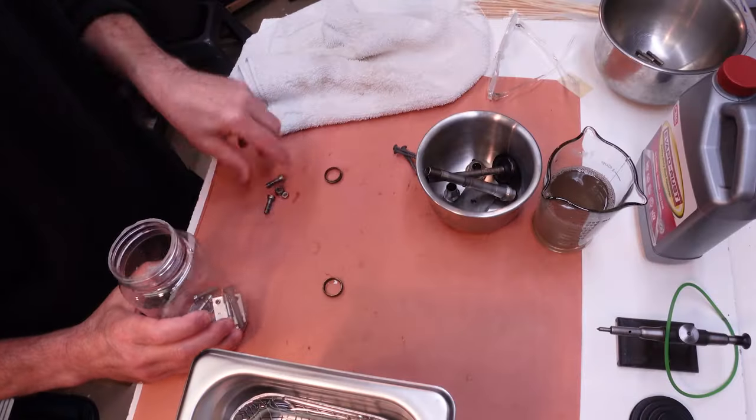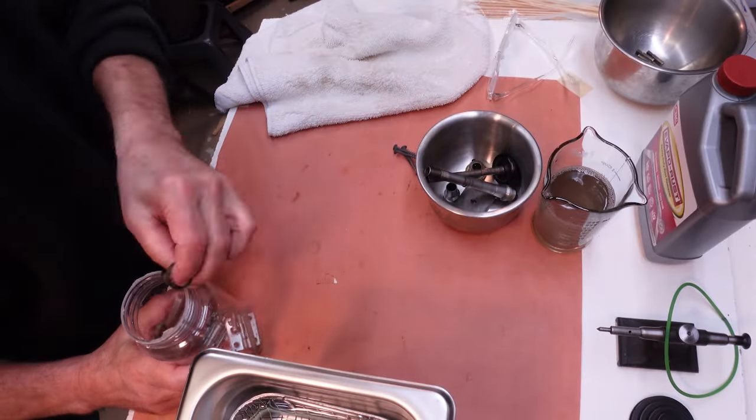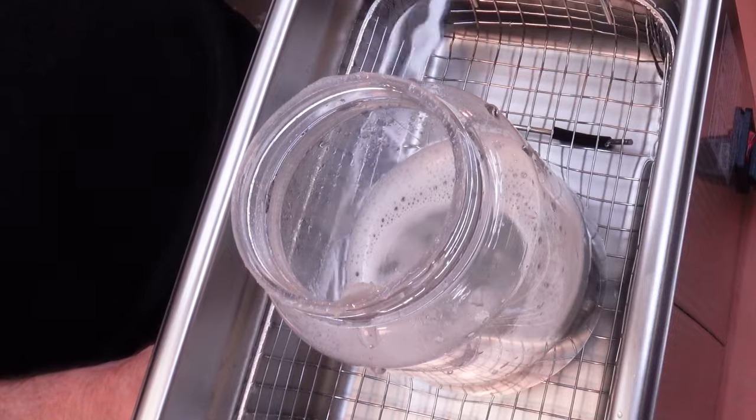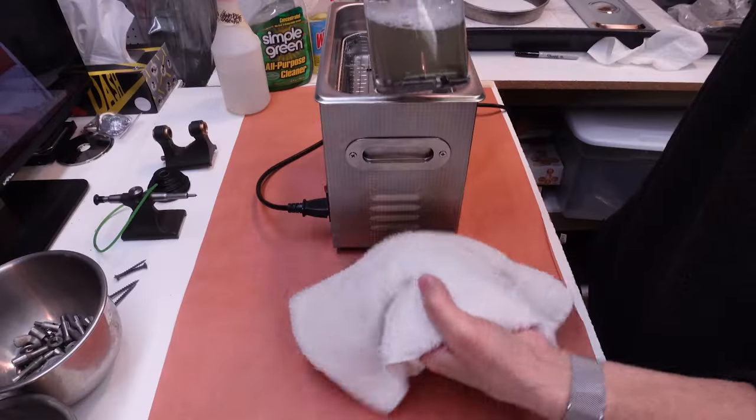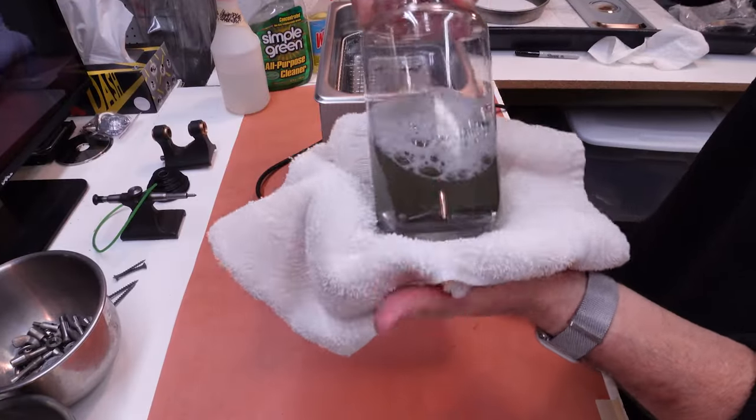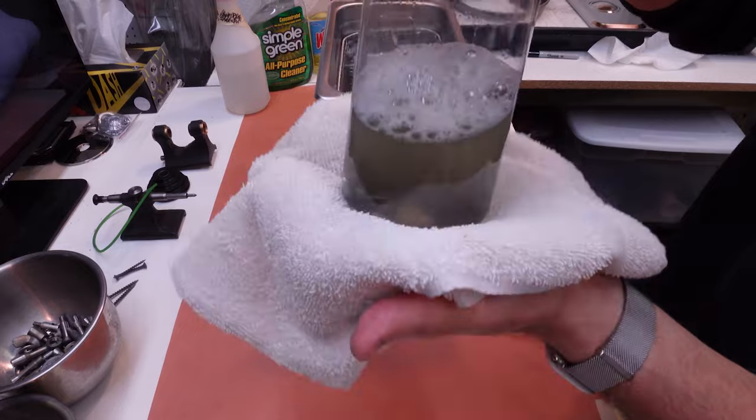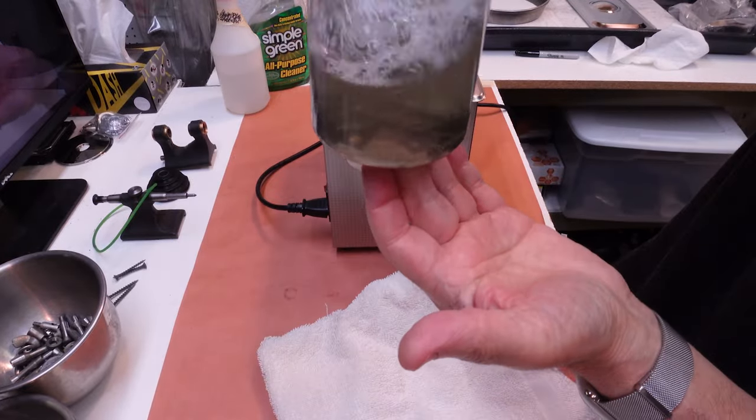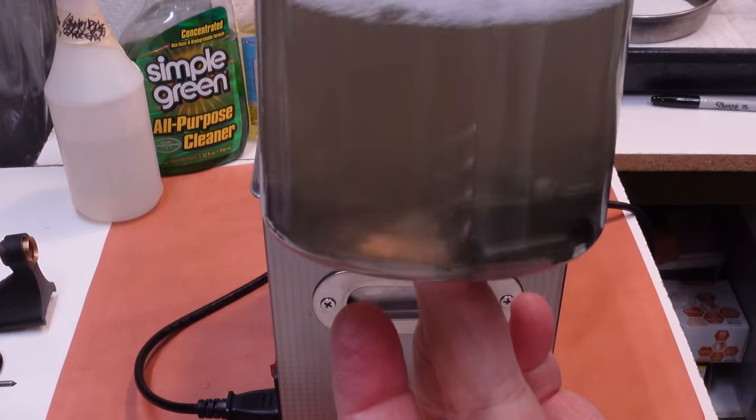While they were cooking, I loaded up another batch of dirty parts for the ultrasonic cleaner. These parts did not need to go into evaporust, and were cleaned in a mixture of dish soap and degreaser, which has worked well for me in the past. Yummy! Look at all that grime that came off.